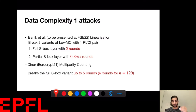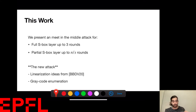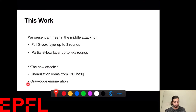The NURS attack needs the degree of the polynomials to be low, and breaks up to five rounds. For N = 129, the smallest block size, it breaks up to four rounds. We will present a two-step MITM attack using the linearization ideas from our previous work plus some Gray code enumeration methods, which breaks the full layer variant up to three rounds and the partial variant up to N/S rounds.